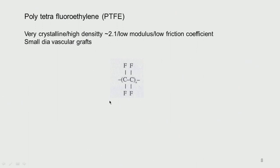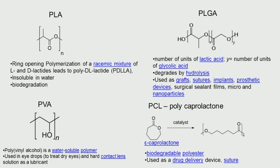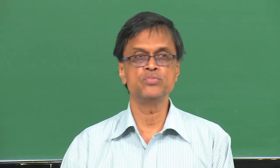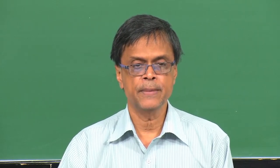PVC — polyvinyl chloride — has one chlorine and three hydrogens per repeat unit. It is very inert and used for short-duration applications such as drain tubes. Because it is very inert, it is not used for many other purposes, especially tissue engineering applications.